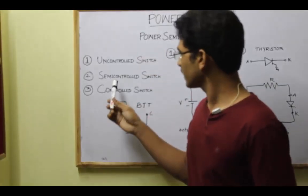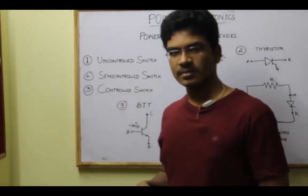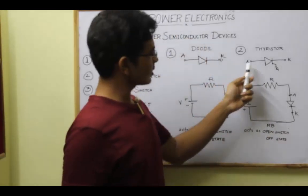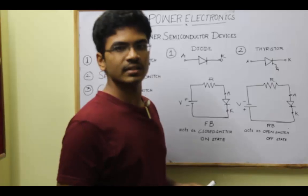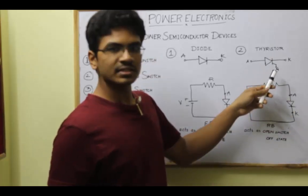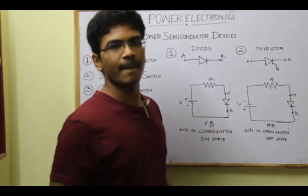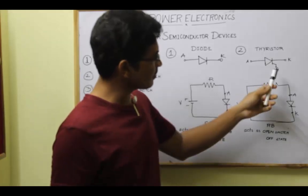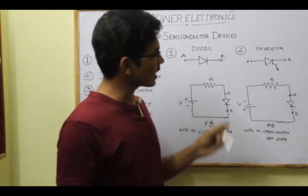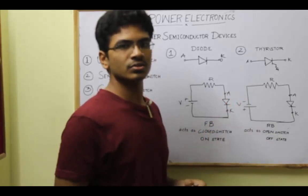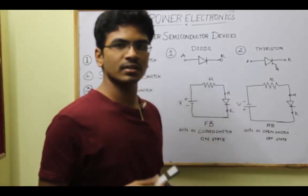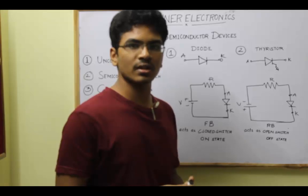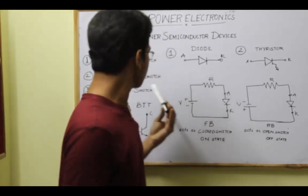Coming to the second one, semi-controlled switch. The best example for the semi-controlled switch is a thyristor. A thyristor is a three-terminal device: anode, cathode, and a gate. It can be turned ON by giving a simple gate pulse to the gate terminal. But when it is turned ON, we cannot turn it OFF by using the same gate terminal. The turn OFF condition of a thyristor depends on the circuit conditions. So we can control the turn ON condition externally, but we cannot control the turn OFF condition. So it is named as a semi-controlled switch.